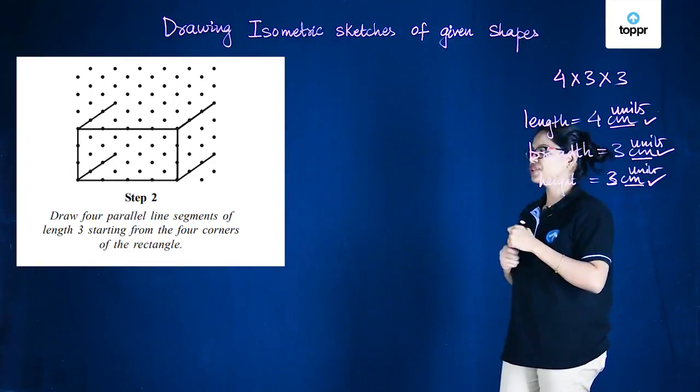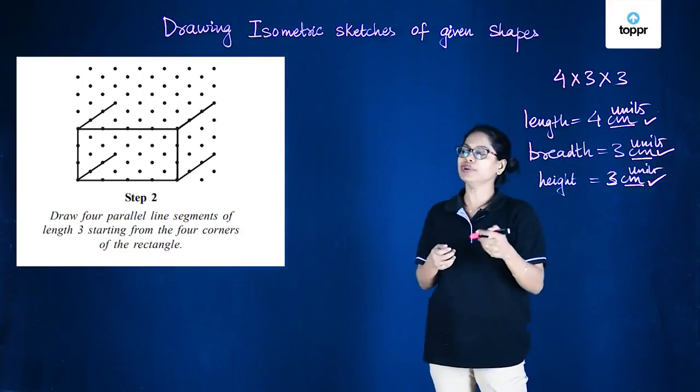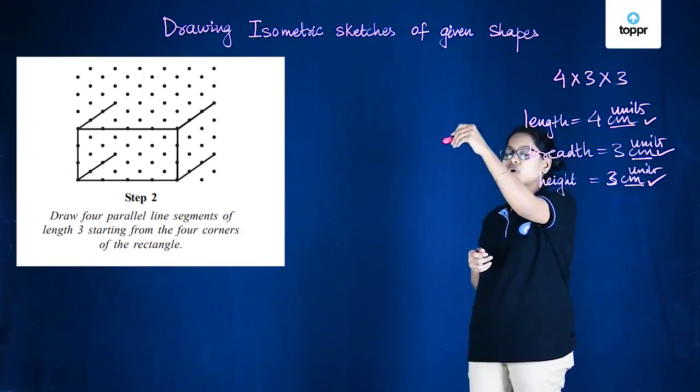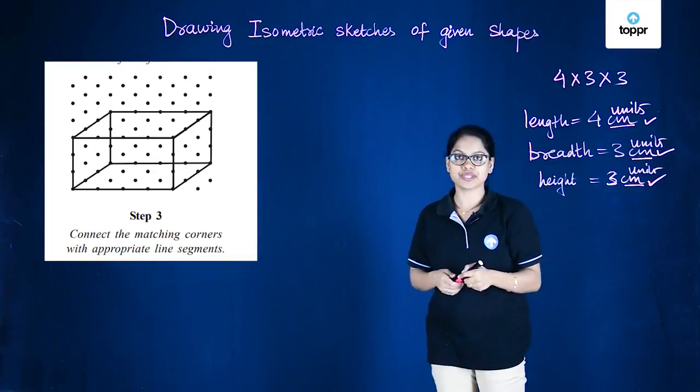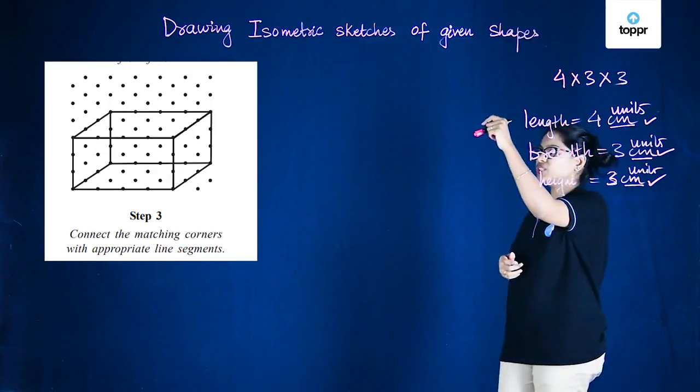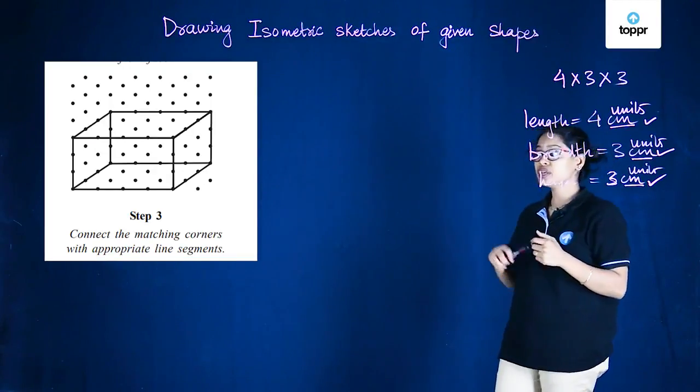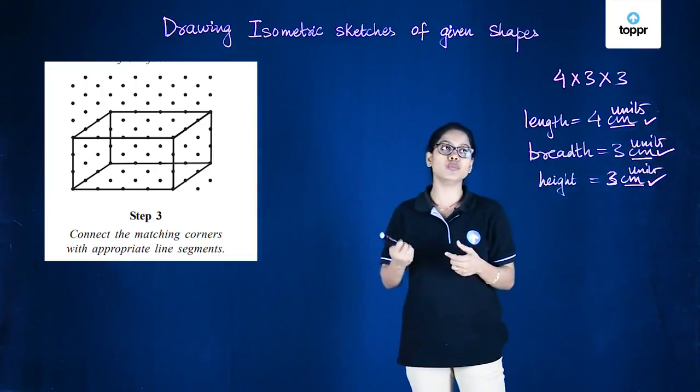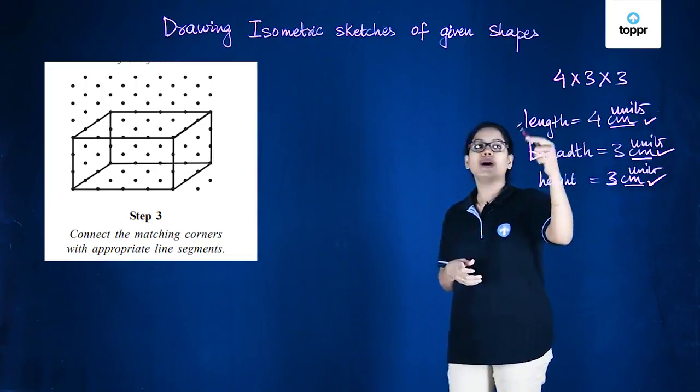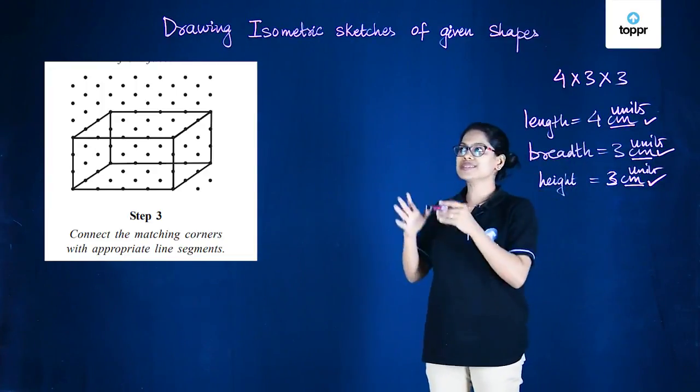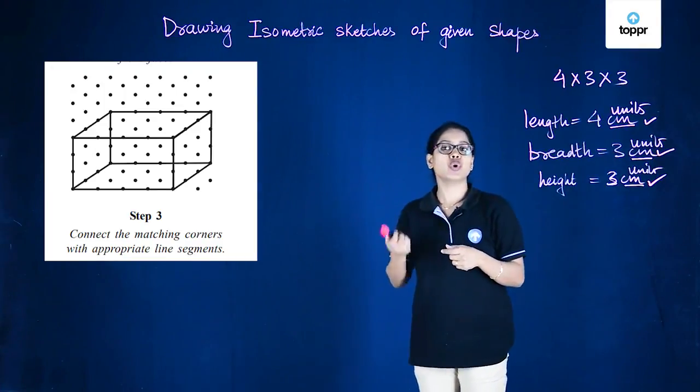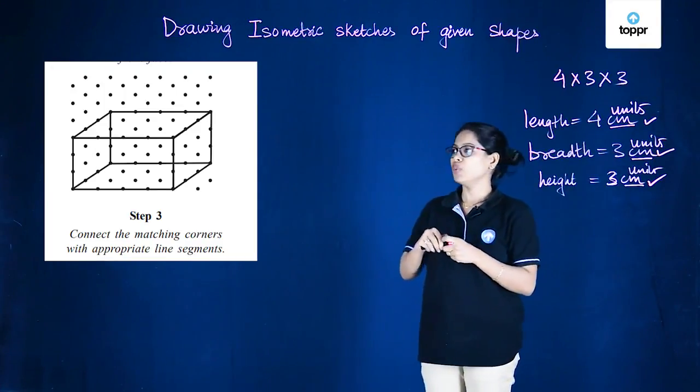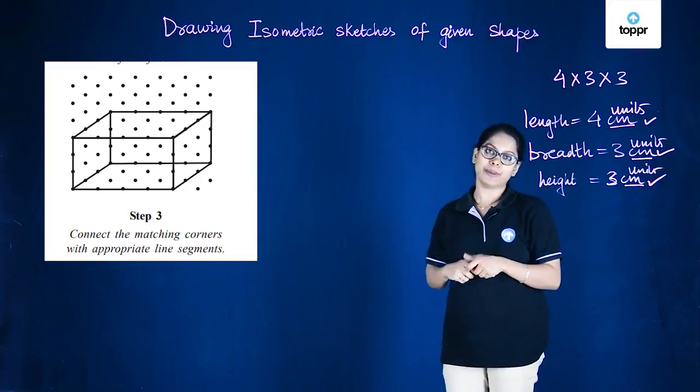These are four parallel lines here and at the end all we need to do is connect the matching corners with suitable line segments. So after connecting the matching corners, what we have here is a cuboid of dimension 4 by 3 by 3. So this is the isometric sketch of the cuboid which looks like this on a plain paper.